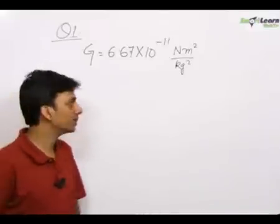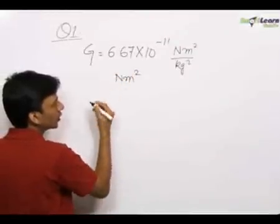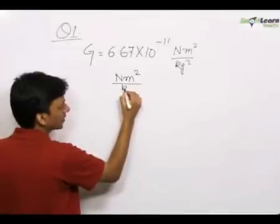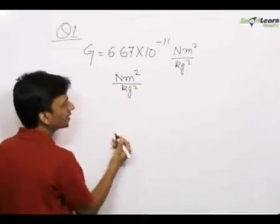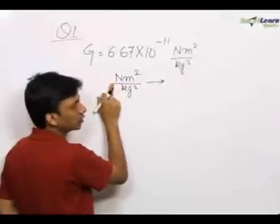The value is given in SI units. Newton is the SI unit of force, meter is the SI unit of length and kg is the SI unit of mass. Now when we convert this into CGS system, we first convert this Newton into CGS system.